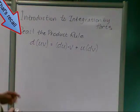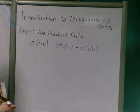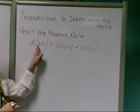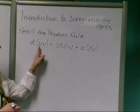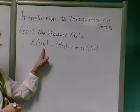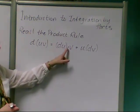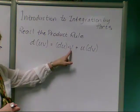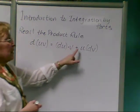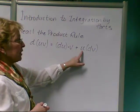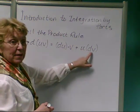We're going to start integration by parts by recalling the product rule. The product rule says if you want to take the derivative of the product of two distinct functions, you do it by taking the derivative of the first function, then multiplying that by the second function untouched, adding the first function untouched times the derivative of the second function.